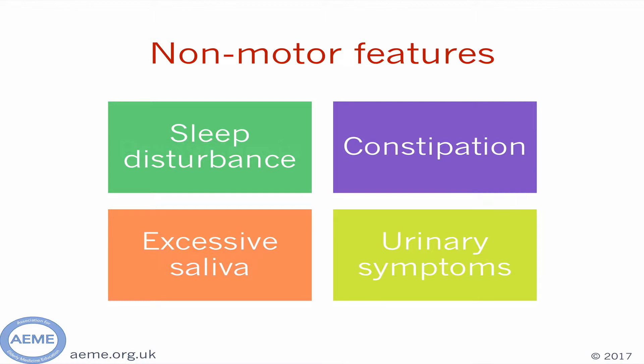Some patients report excessive saliva and drooling. They may also have urinary symptoms such as urgency and incontinence. Hyposmia — a reduced sense of smell — may be present in some patients, but they are unlikely to volunteer this information without being asked. These non-motor features can be just as distressing for patients as motor ones, and there is evidence they have more of an impact on a patient's quality of life. They therefore also need addressing, although unfortunately they can often be harder to treat than motor symptoms.